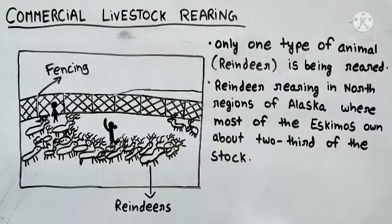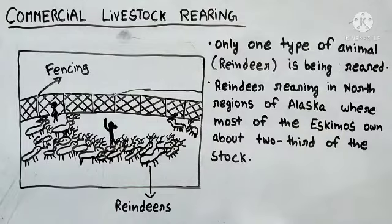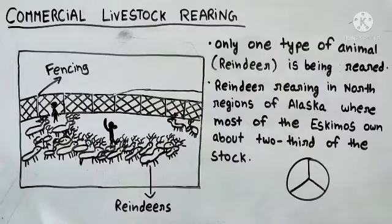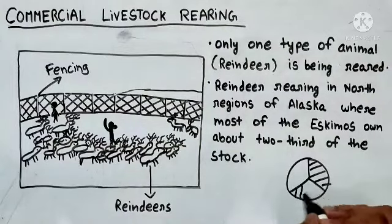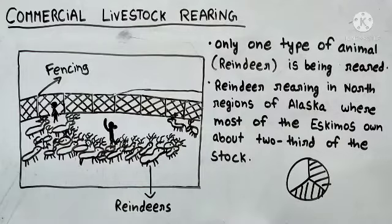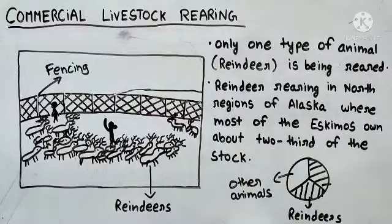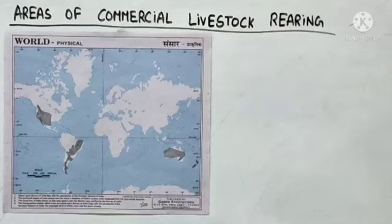Reindeer rearing in north region of Alaska, where most of the Eskimos own about two-thirds of the stock. Eskimos ek tribe hoti hai jo ki northern Canada aur Alaska waale region mein rehti hai. Majority of the Eskimos ke ranches pe tumhe reindeers dikhenge. Jab north Alaska waale region mein ek survey kiya gaya tha to usme total stock mein se two-thirds stock hamaara reindeers ka tha aur one-third stock doosre animals ka.